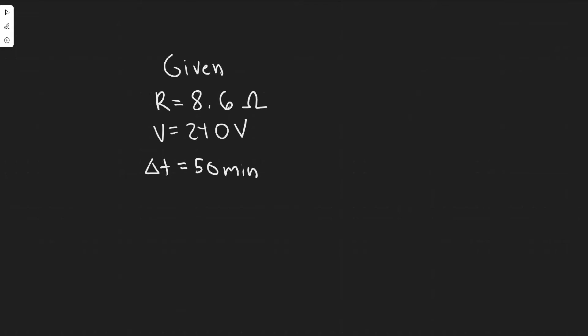We know the resistance of the heating element is 8.6 ohms. We know it's connected to 240 volts. And for part B, we're trying to find how much charge passes through in 50 minutes, so they give us a change in time of 50 minutes. Let's start off with part A.